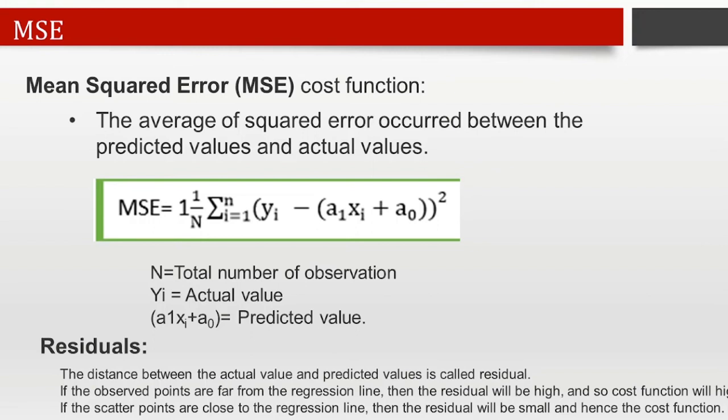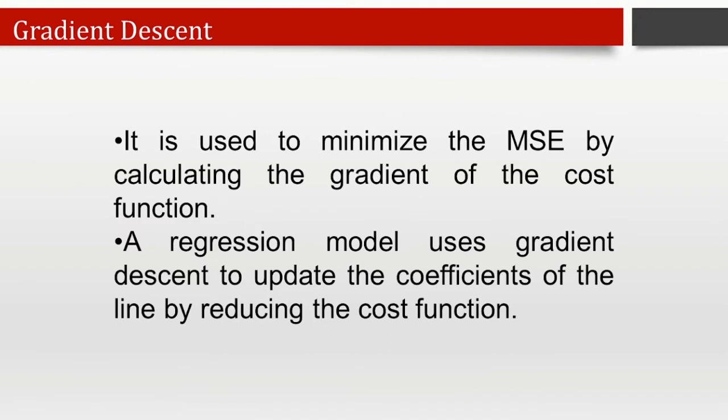If the observed points are far from the regression line, then the residual will be high and so the cost function will be high. If the scatter points are close to the regression line, then the residual will be small and hence the cost function will be small. Gradient descent is used to minimize the MSE by calculating the gradient of the cost function. A regression model uses gradient descent to update the coefficients of the line by reducing the cost function, done by random selection of coefficient values and then iteratively updating them to reach the minimum cost function.